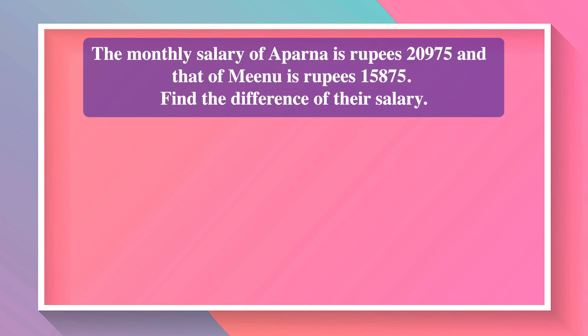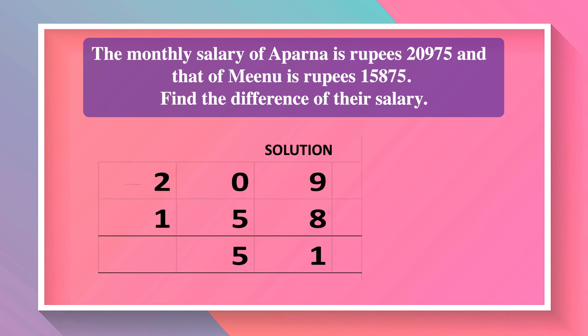The monthly salary of Aparna is ₹20,975 and that of Minu is ₹15,875. Find the difference of their salaries. On subtracting the two salaries, we get ₹5,100. So the difference between their salaries is ₹5,100.